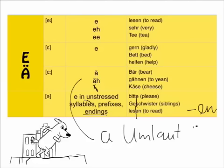Bitte, Geschwister. So here we actually have it two times: ge-uh. So once again, Geschwister. Lesen. Lesen. Here, what also happens, you nearly can't hear it anymore. Lesen or lesen. Lesen. Lesen. So yeah, you see, the E is really a very, very short sound. So we read the whole list again: lesen, sehr, Tee, gern, Bett, helfen, Bär, gähnen, Käse, bitte, Geschwister, lesen.